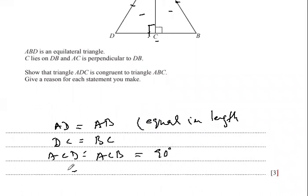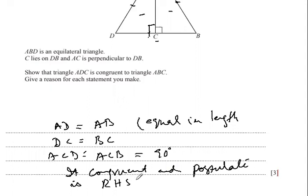So with that, we can say that they are congruent, and the postulate is RHS (right angle, hypotenuse, side). The two sides are equal and one angle is 90 degrees, which is common to both triangles, which makes these triangles congruent.